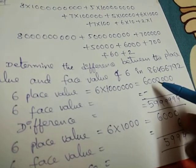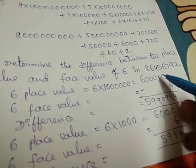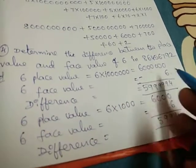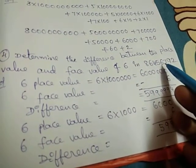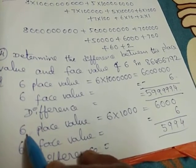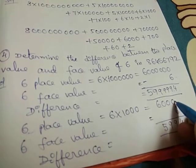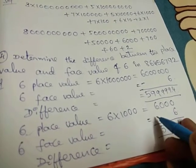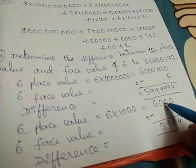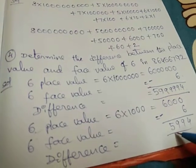Using borrowing subtraction: 60,00,000 − 6 = 59,99,994. For the second 6, it is in the thousands place, so place value = 6 × 1,000 = 6,000. Face value = 6. Difference = 6,000 − 6 = 5,994 (using borrowing subtraction).